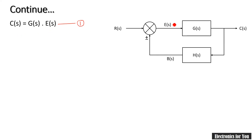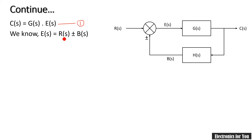Now we know that E(S) is the error signal and it is generated by the summing point. The output of the summing point is the algebraic sum of its two input signals, therefore E(S) equals R(S) ± B(S). Here the plus-minus sign indicates positive feedback and negative feedback respectively. This is equation number 2.